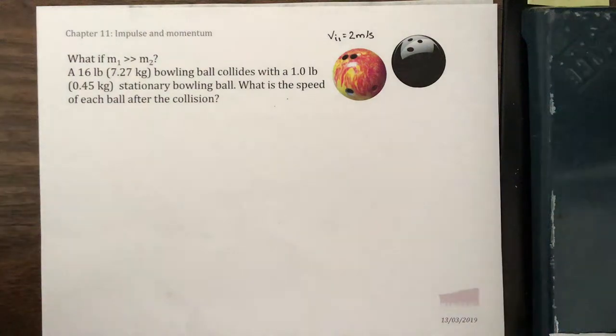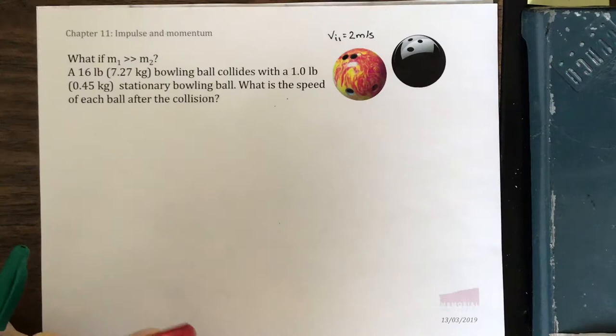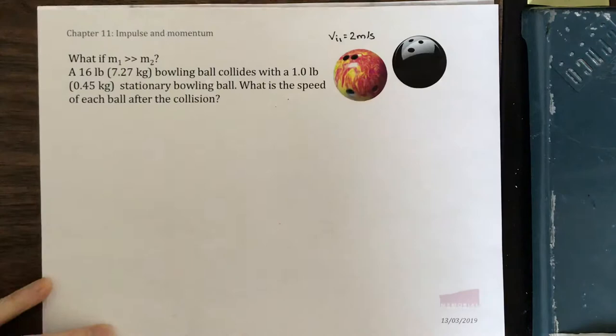In this problem, we have an elastic collision where a very heavy ball collides with a small ball. The small ball is initially stationary, the larger one is initially moving, so let's draw a picture.